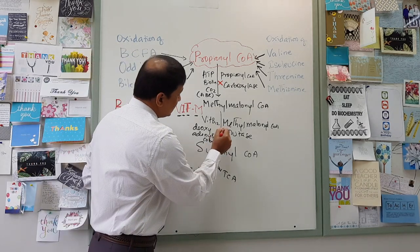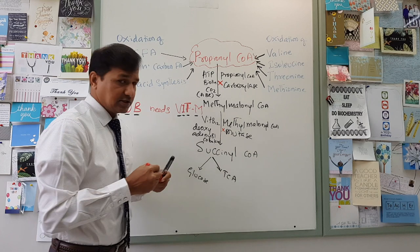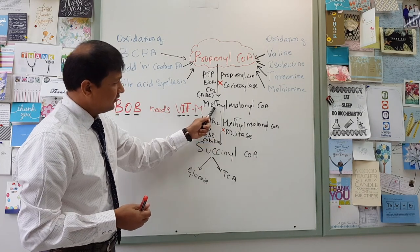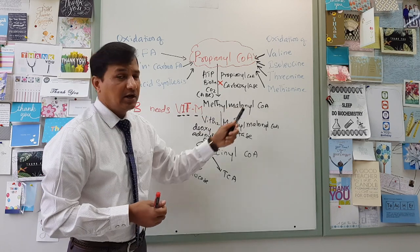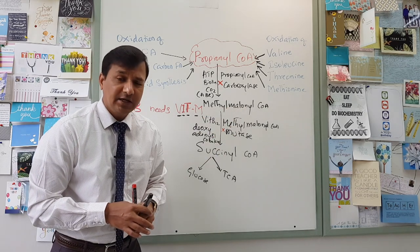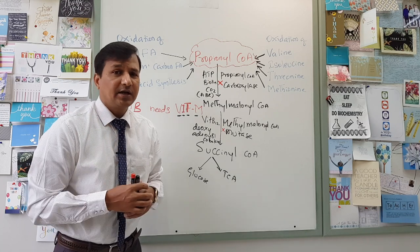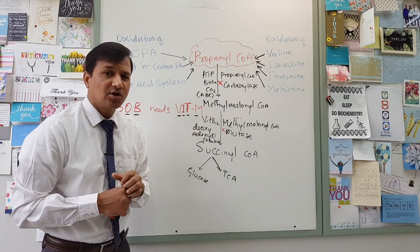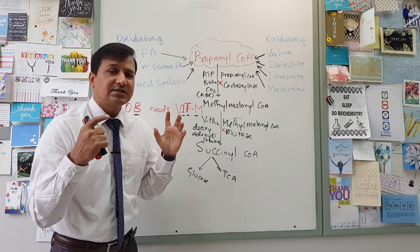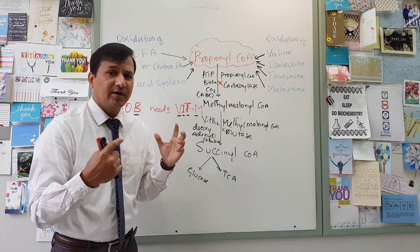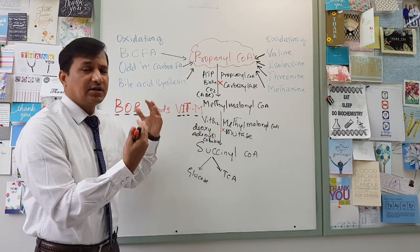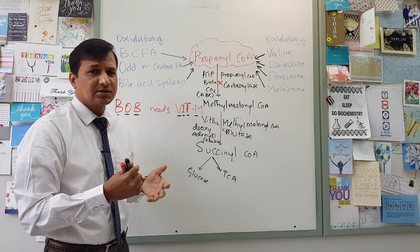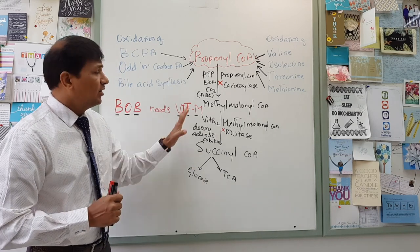What if there is a defect in the methylmalonyl-CoA mutase enzyme? Methylmalonyl-CoA mutase defect leads to elevation of methylmalonyl-CoA, which eventually causes elevation of methylmalonate levels in the blood and urine, giving rise to methylmalonic acidemia or methylmalonic aciduria. In this condition, there will again be neurological signs and metabolic acidosis.